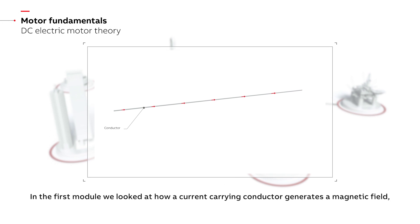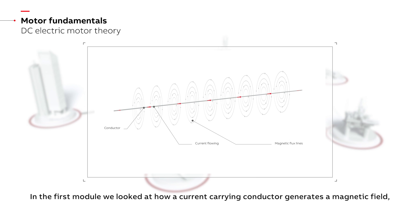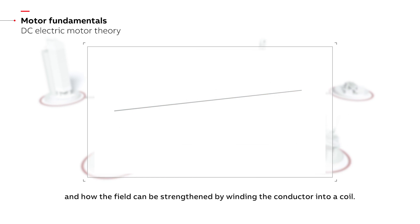In the first module we looked at how a current carrying conductor generates a magnetic field and how the field can be strengthened by winding the conductor into a coil.